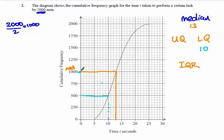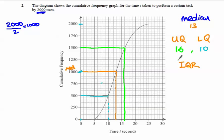The upper quartile is halfway between the median and the very top of the graph at 2,000 — so halfway between 1,000 and 2,000 is 1,500. We go across from 1,500 to the graph and then down, and that gives us 16. So the upper quartile is 16. The interquartile range is 16 minus 10, which is 6.